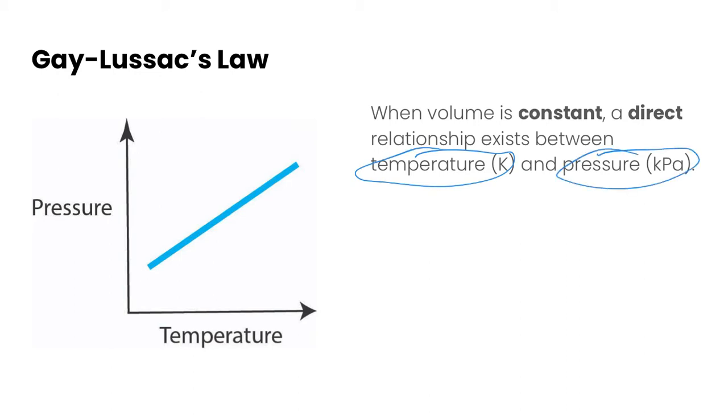And so if you were to graph this relationship, you would get a straight increasing line. So when pressure is low, temperature is low. When pressure is high, temperature is high.